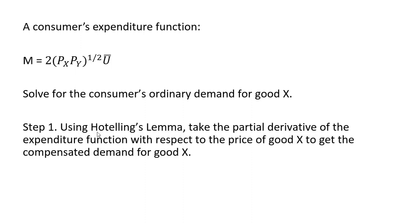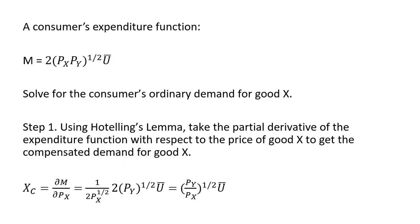Step one: using Hotelling's Lemma, take the partial derivative of the expenditure function with respect to the price of good x to get the compensated demand for good x. So the first thing we're going to do is get the compensated demand for good x. Here's the partial derivative — taking the partial derivative of M with respect to the price of good x.